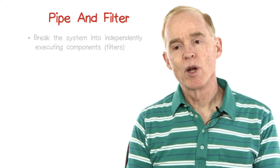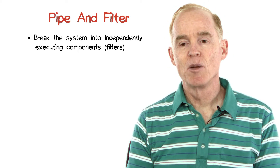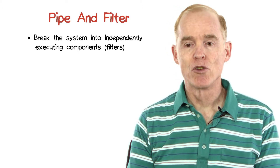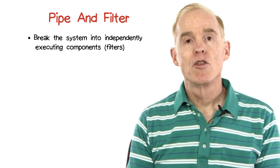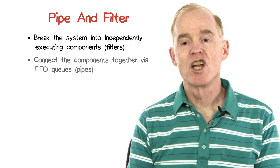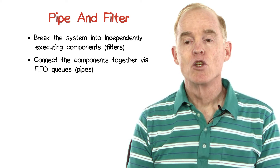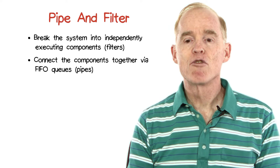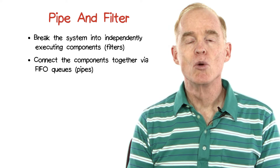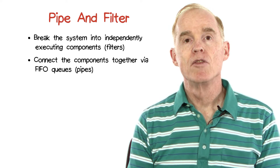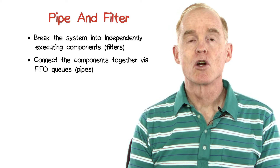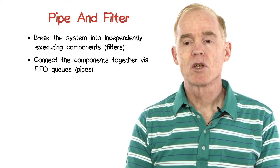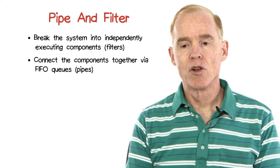In the case of pipe and filter, we break the system into independently executing components called filters. The filters are connected together using a FIFO, or first in, first out, queue, and these queues are called pipes, so we have pipes connecting together the filters.